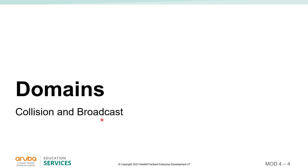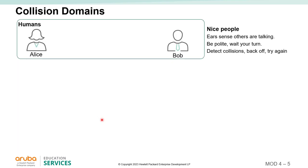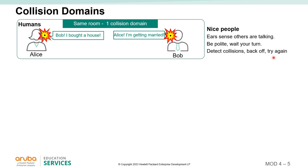The word 'domain' means different things in different contexts. A collision domain: imagine you and I both talk at the same time — we collide. If there's a collision, neither of us can hear the other. In a network, when multiple devices communicate simultaneously, a collision happens. Like polite humans, devices detect the collision, back off, and try again.